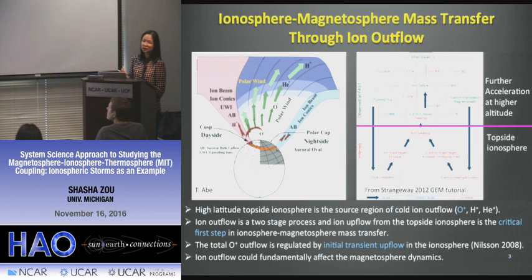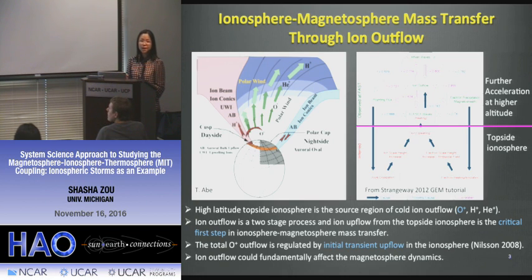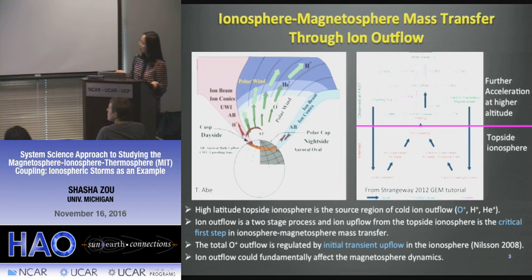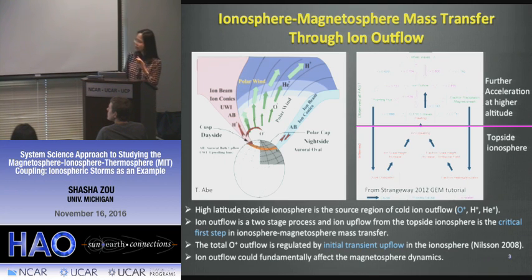The ion outflow can significantly affect magnetosphere dynamics, including mass loading of the tail region, changing the composition of the ring current, and altering the reconnection rate. In recent years there is a consensus that ionosphere outflow is actually a two-step process: first, upflow happens at lower altitudes, and then the plasma in the ionosphere is lifted to higher altitudes where it can be further accelerated, gain enough energy, and become outflow — some entering the magnetosphere, some lost to interplanetary space. A recent study suggested the total outflow is highly regulated by this upflow from the topside ionosphere.